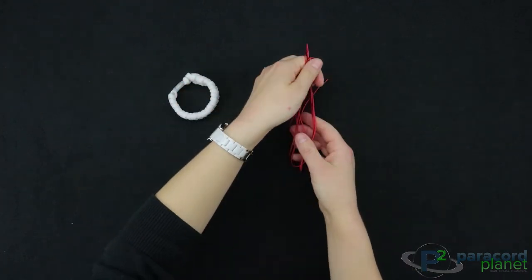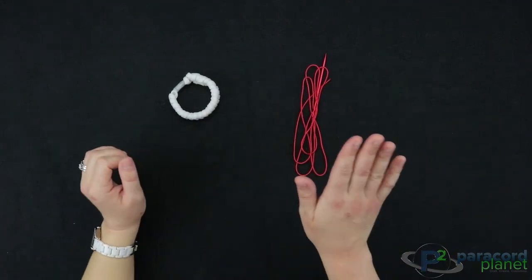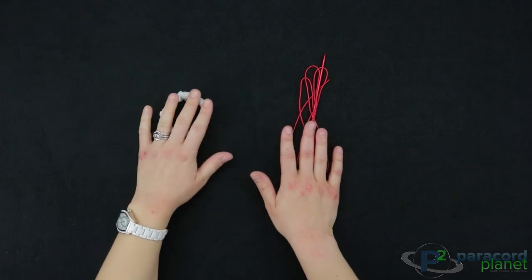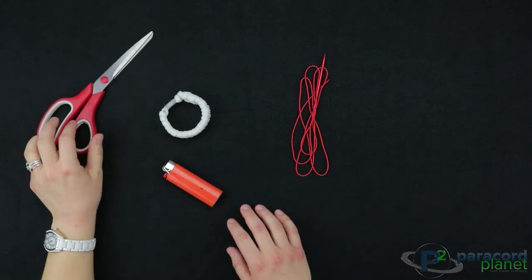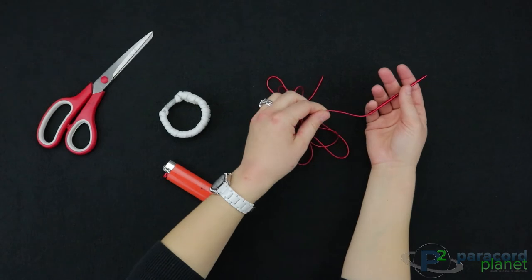Then you will also need micro cord, and I'm using red to make it baseball themed. I have here about three and a half feet for my six and a half inch bracelet. Then you will also need a lighter and the scissors, and you will of course need a fid which I have already attached to my micro cord.